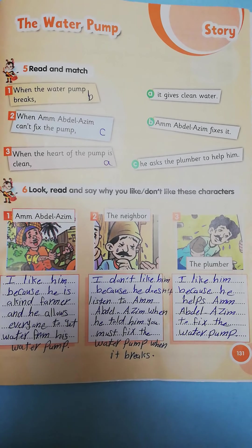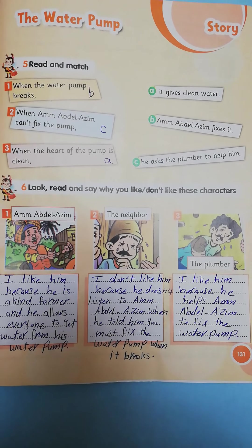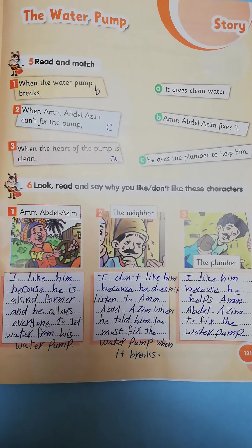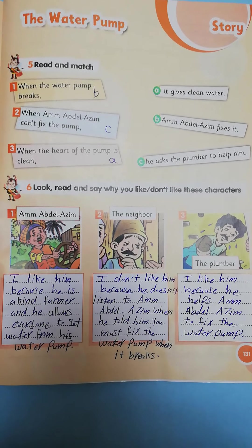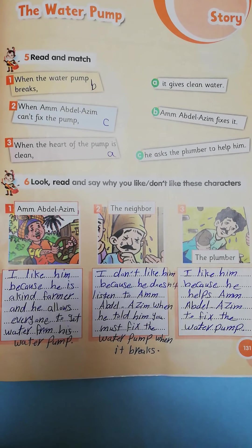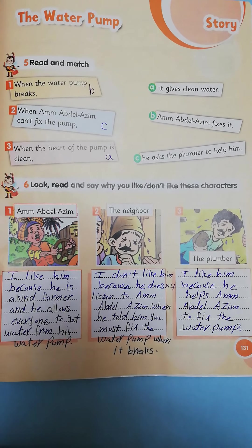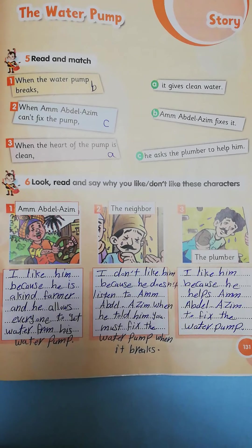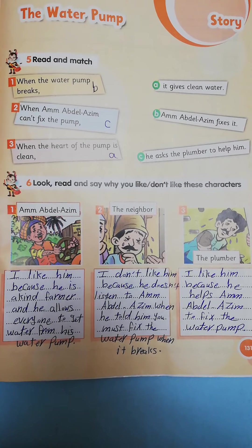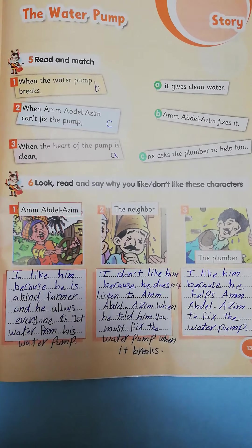Move to page 131, the last page. Exercise 5: Read and match. Number 1: When the water pump breaks — the right answer is B: Am Abdel Azeem fixes it. Number 2: When Am Abdel Azeem can't fix the pump — the right answer is C: He asks the plumber to help him. Number 3: When the heart of the pump is clean — match it with A: It gives clean water.